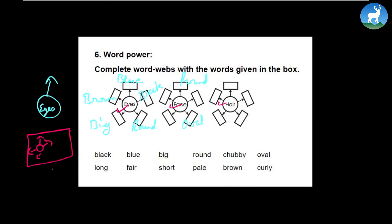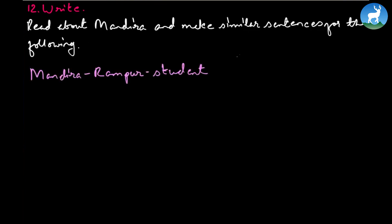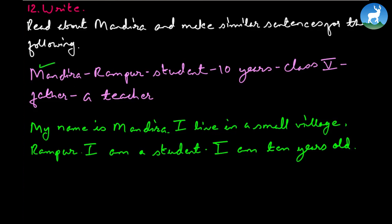So before we conclude this chapter describing people, let's come to number 12. Read about Mandira and make similar sentences for the following. Now here are options given here: Mandira, Rampur, student, 10 years, class five, father, and finally a teacher. Now here are these words or phrases given, and you have to make a wonderful paragraph out of it. Like I'm going to add something here. The book describes it as, from the first person: my name is Mandira. I live in a small village, Rampur. I'm a student. I'm 10 years old. See, so here comes Mandira. My name is Mandira. I live in a small village, Rampur. I'm a student. I'm 10 years old. I'm going to add something here. My hobby is to sing and read novels.